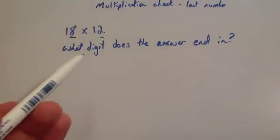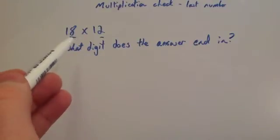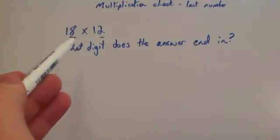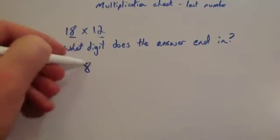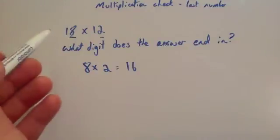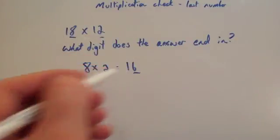So we've got 18 times 12, and the question says what does the answer end in? Well, because you've got 18, which the last digit is an 8, and you've got 12 and the last digit is a 2, if you multiply 8 by 2 you get 16. So that means our answer, if we actually did this, 18 times 12, the last digit in our answer would have to be 6.